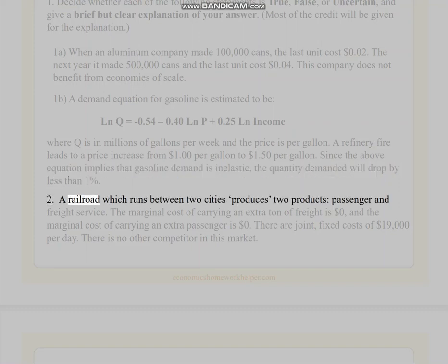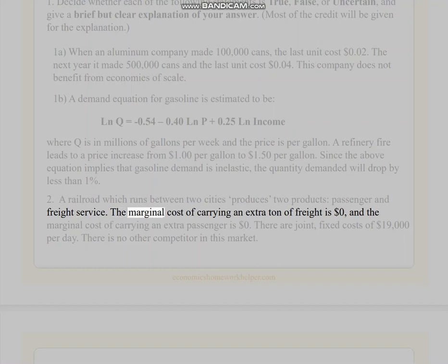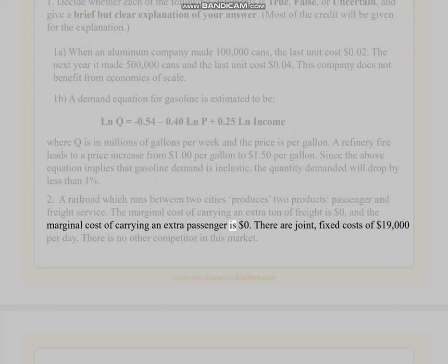2. A railroad which runs between two cities produces two products: passenger and freight service. The marginal cost of carrying an extra ton of freight is $0, and the marginal cost of carrying an extra passenger is $0. There are joint, fixed costs of $19,000 per day. There is no other competitor in this market.